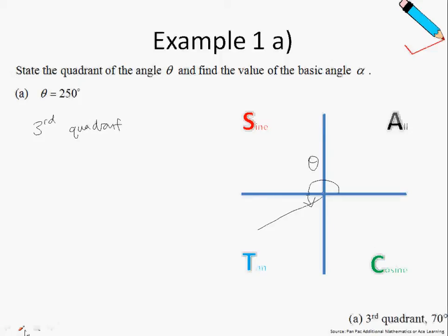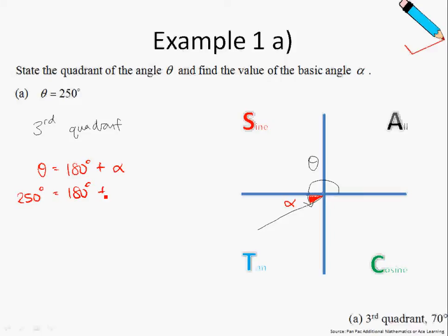What is the basic angle alpha? I'm going to use a red pen to show where alpha is. Alpha is always measured with respect to the horizontal axis — so this is my alpha. Recall that for the third quadrant, theta equals 180 degrees plus alpha. Since theta is 250 degrees: 250 = 180 + alpha, so alpha is 250 minus 180, which is 70 degrees. This solves the second part of example 1a.